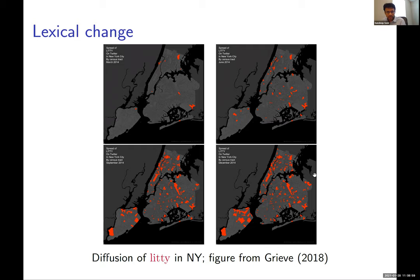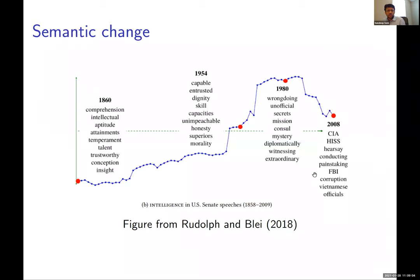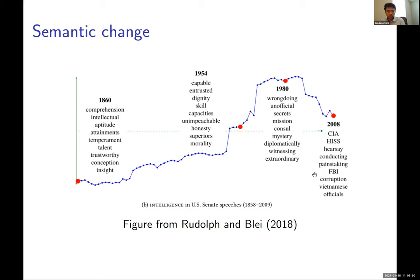Lexical change — the introduction of new words — is by far not the only type of change that happens. This is an example taken from Maya Rudolph and David D's work a few years back, where they developed a model to get semantic shifts from data — words that change in meaning. An example they highlighted was the word 'intelligence,' which changes from a personal meaning related to mental ability to a more collective meaning referring to national security, as seen in US Senate speeches over about 150 years.